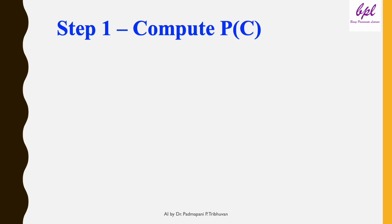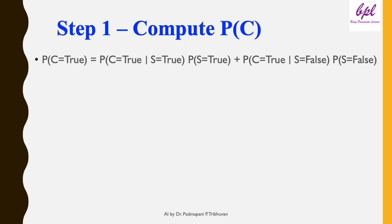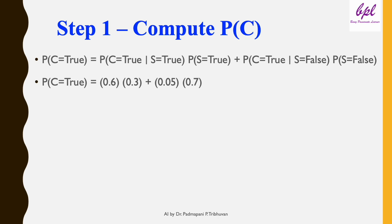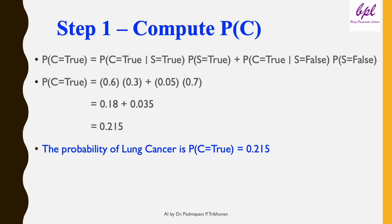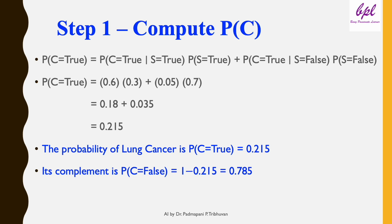Let's start by calculating the marginal probability of lung cancer C using the law of total probability. The formula is: P(C=true) = P(C=true | S=true) × P(S=true) + P(C=true | S=false) × P(S=false). Substituting the values: P(C=true) = 0.6 × 0.3 + 0.05 × 0.7 = 0.18 + 0.035 = 0.215. So the probability of lung cancer is 0.215, and its complement is P(C=false) = 1 − 0.215 = 0.785.